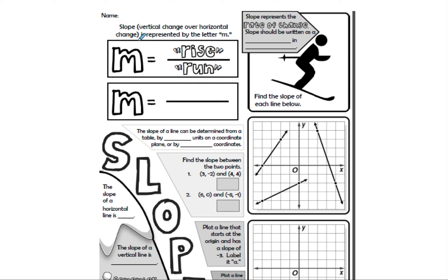Slope is vertical change over horizontal change, represented by the letter m — rise over run. The formula is y2 minus y1 over x2 minus x1. Slope represents the rate of change and will be written as a fraction in simplest form.